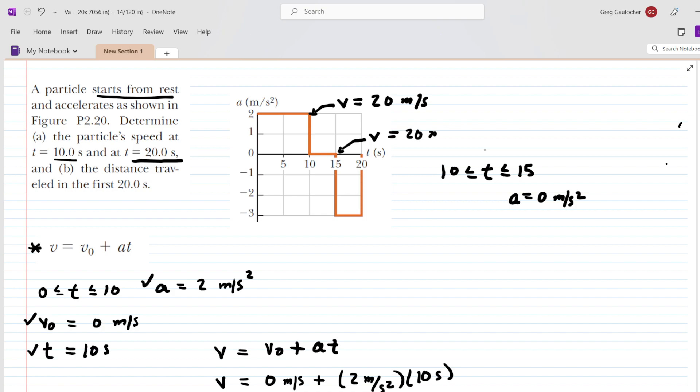It has not sped up, it has not slowed down, so it's still traveling at 20 meters per second. Let's keep that idea in mind as we examine the next time interval right here between 15 seconds and 20 seconds. Once again, we want to ask ourselves, what is the acceleration during that time interval? We can see the acceleration is equal to negative 3 meters per second squared.